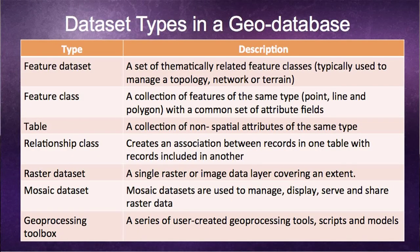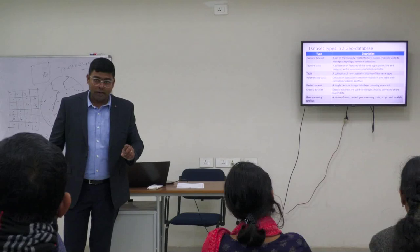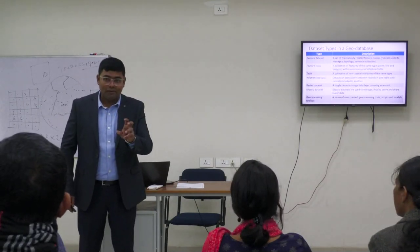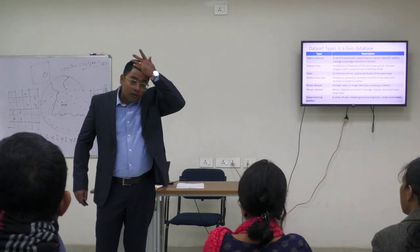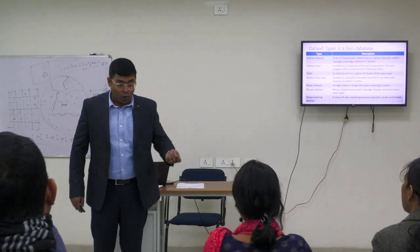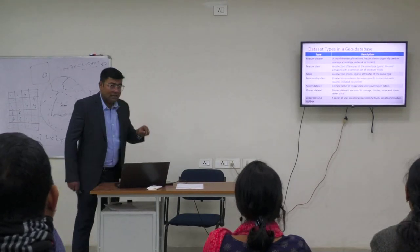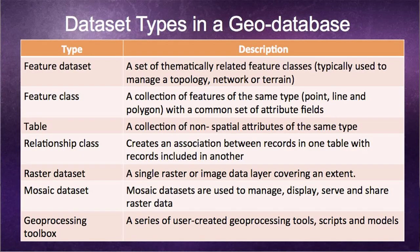The broad dataset types in a geo-database include: feature data set — thematically related features grouped together. For example, a road map of Assam would contain administrative boundaries (polygon), roads (polyline), and important cities (point) — all these feature classes fall under one feature data set. Other types include: feature class, tables, relationship class (which relates to topology), raster dataset, mosaic dataset, and geo-processing toolbox.